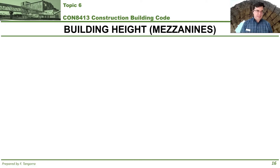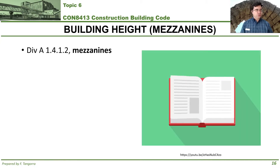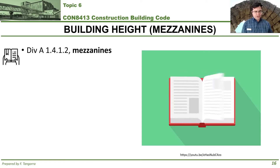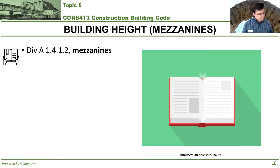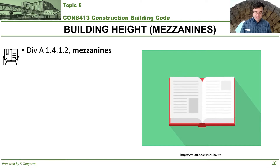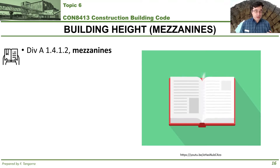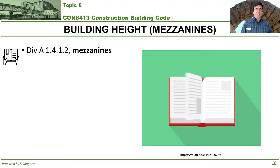The next item I want to discuss when it comes to building height is mezzanines. I'd ask you to go check out the definition for mezzanines. According to the building code, a mezzanine refers to an intermediate floor assembly between the floor and the ceiling of any room or story, and includes also an intermediate interior balcony. Basically, one way to look at this is that a mezzanine is like a partial story that you find inside a building.